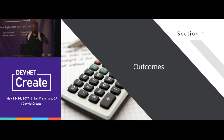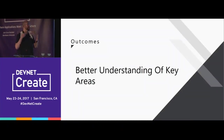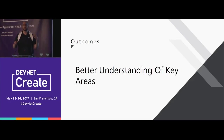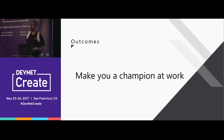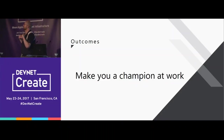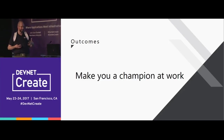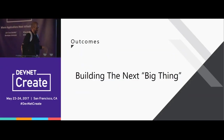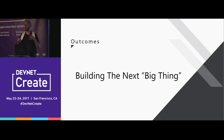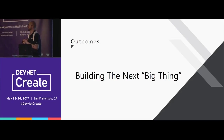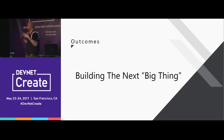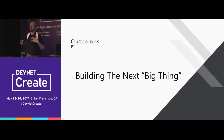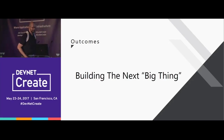I've got a couple of outcomes for you. One, I want to help you have a better understanding of key areas around neural networks — what makes them powerful and why they exist. Two, I want to make you a champion at work so you can go back and say, 'I know enough now to be very dangerous, and this seems like something we should look into.' And three, I want to help you guys build the next big thing.